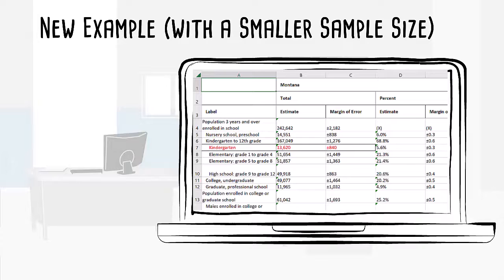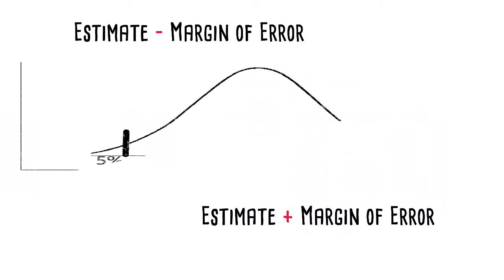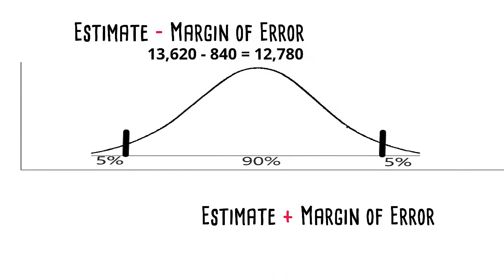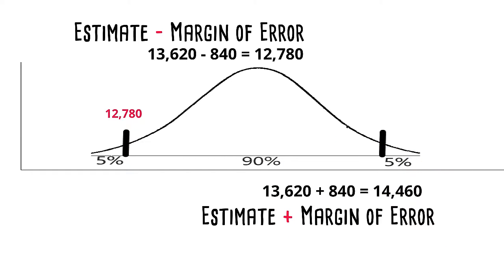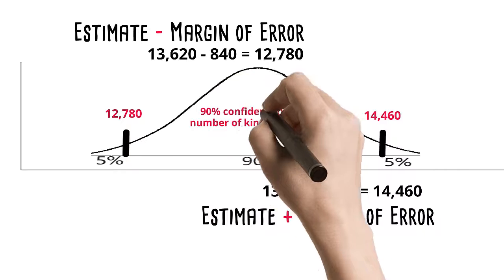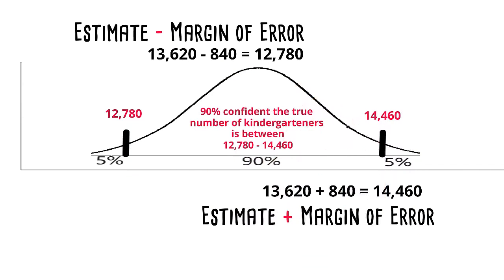By adding and subtracting the margin of error from the point estimate, we can calculate a 90% confidence interval for that estimate. Let's draw this on a normal curve and describe what we see. We take our point estimate of 13,620 kindergartners in Montana and subtract our margin of error of 840 to get the lower bound of our confidence interval — that's 12,780. Then we add the margin of error to the point estimate to get 14,460, which gives us the upper bound. We can be 90% confident that the true kindergarten enrollment in Montana is between 12,780 and 14,460.